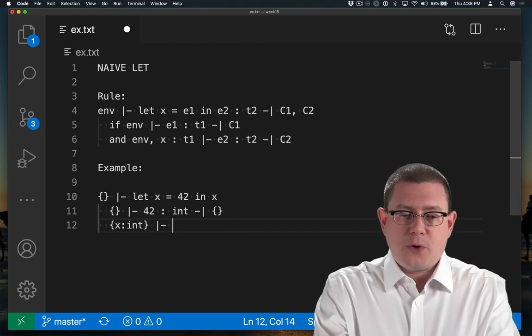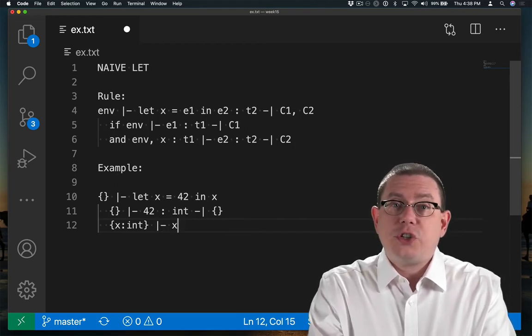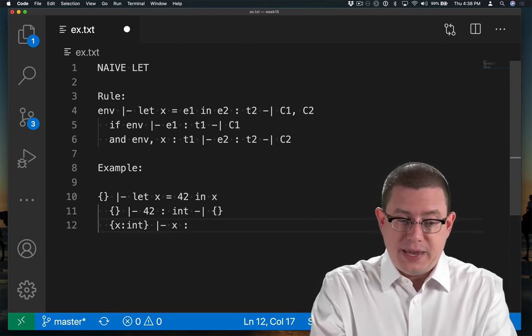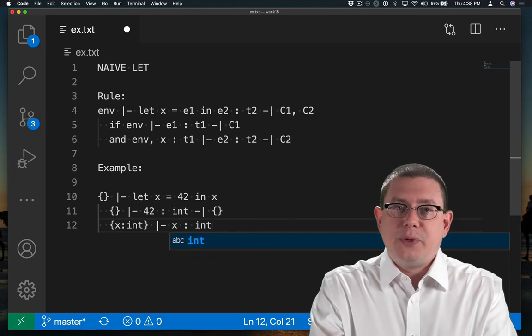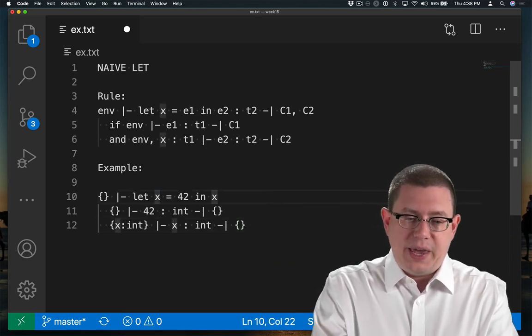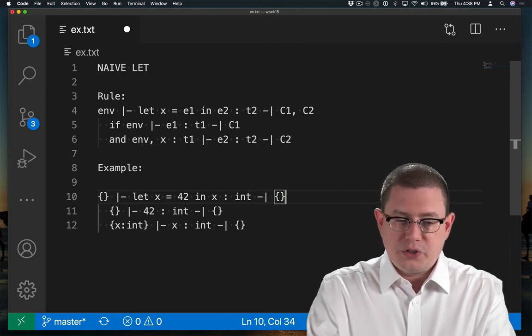And we would go ahead and infer the type of the body expression, which is x. Well, of course, that's just the name rule that we need to use for that. So that would have type int, because that's what the name is bound to in the static environment, and generate no constraints. So at the end, we would conclude that this let expression has type int, and there are no constraints.